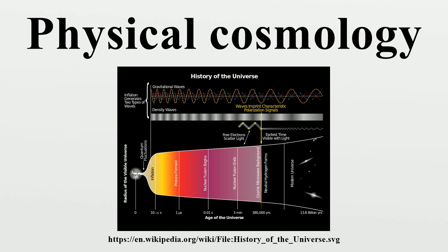The cosmological solutions of general relativity were found by Alexander Friedmann in the early 1920s. His equations describe the Friedmann-Lemaître-Robertson-Walker universe, which may expand or contract, and whose geometry may be open, flat, or closed.